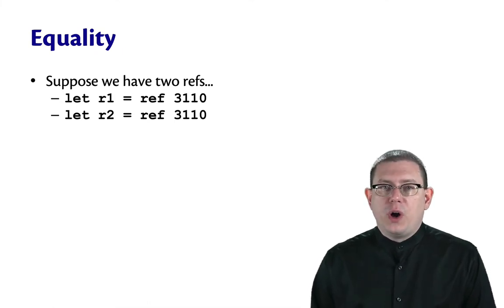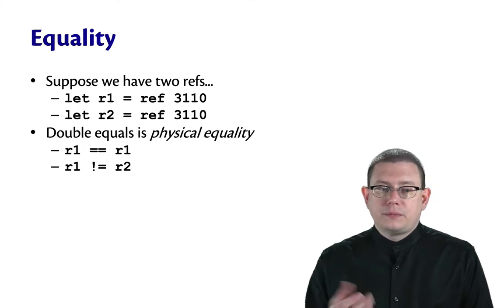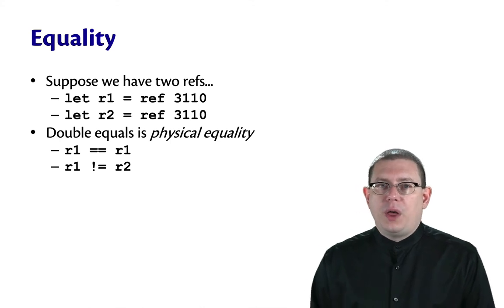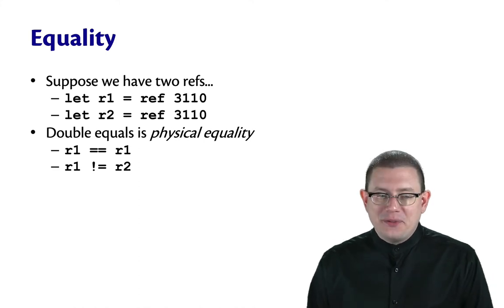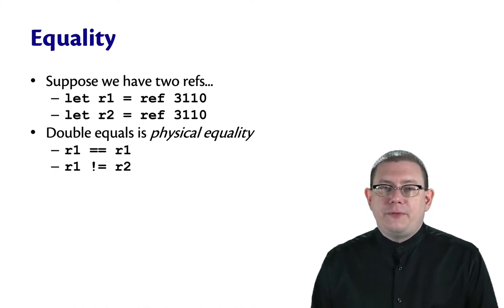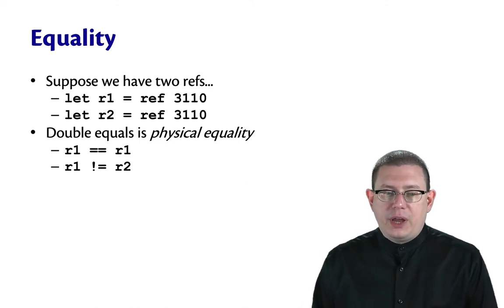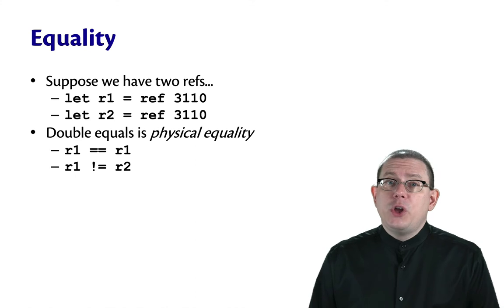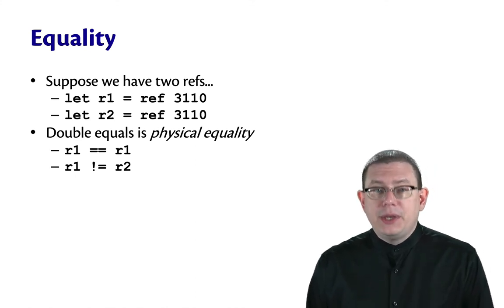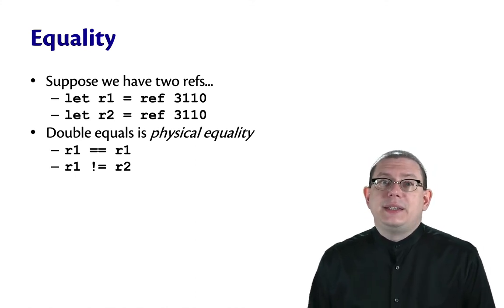Suppose you have two refs, R1 and R2, both initially containing the same contents. Double equals is physical equality. It checks to see whether those are physically the same location in memory. So R1 double equals itself because it is the same location as itself. But R1 is not physically equal to R2. So the negation of physical equality is written exclamation point equals. They are not the same location in memory. Even though they have the same contents, that doesn't matter. Physical equality is asking, is it the same location in memory?